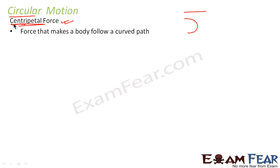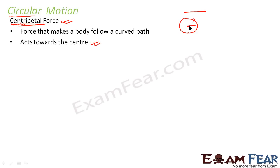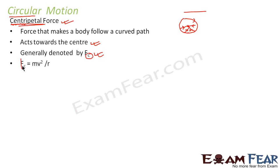Centripetal — 'centri' comes from the word center of a circle. Centripetal force always acts towards the center. If a body is moving in a circular path, the centripetal force will always act in the direction towards the center of the circle at every point of time. It is generally denoted by Fc, where the subscript c denotes centripetal. Centripetal force is given by mv²/r.